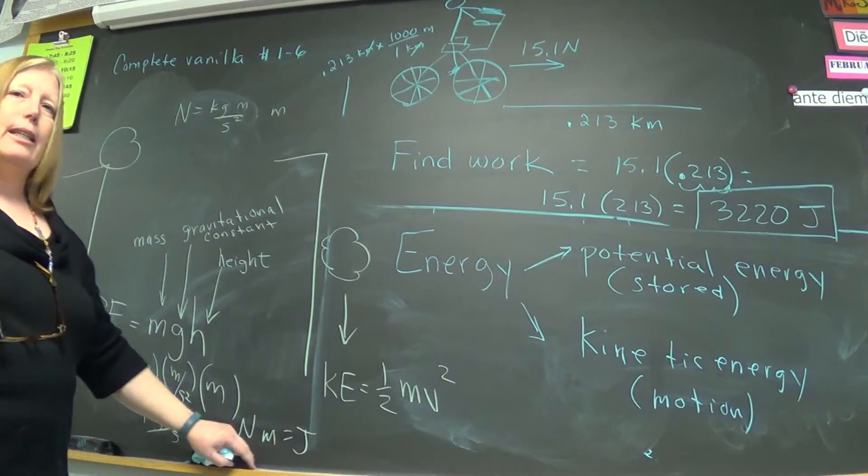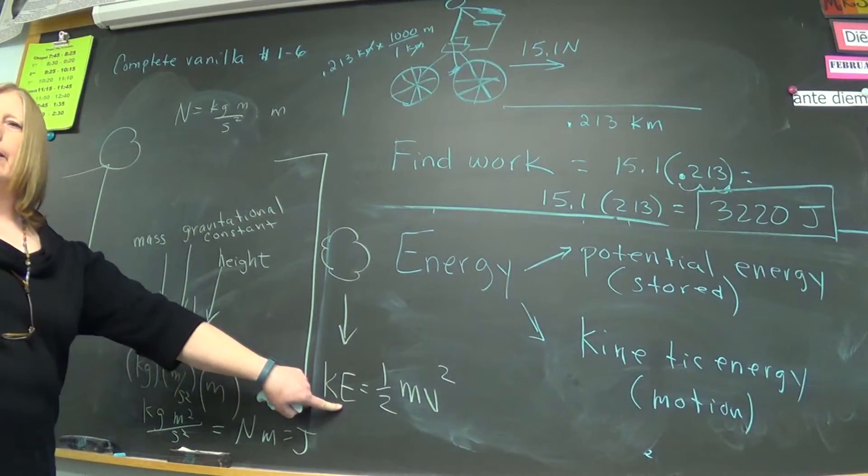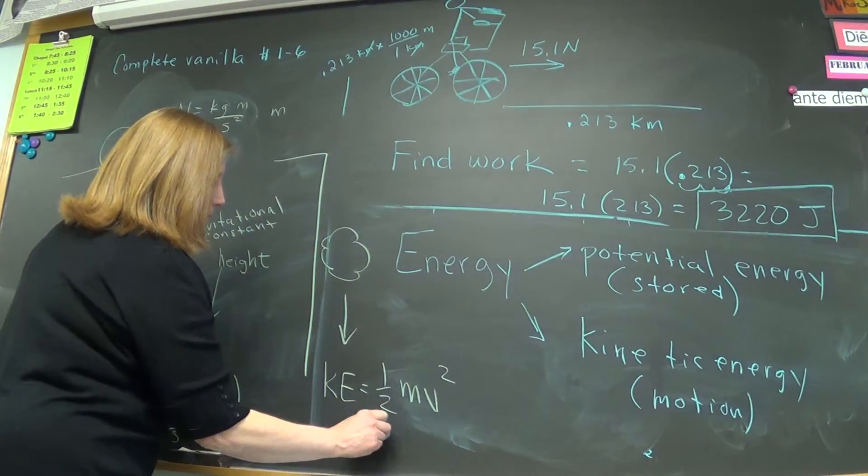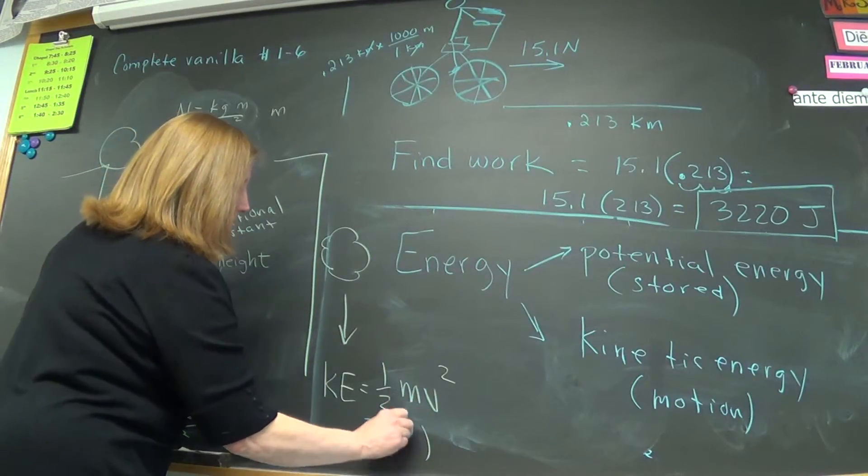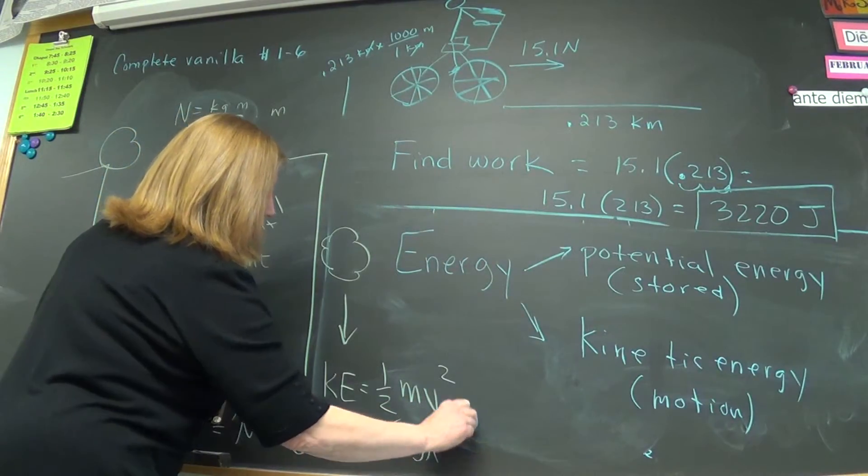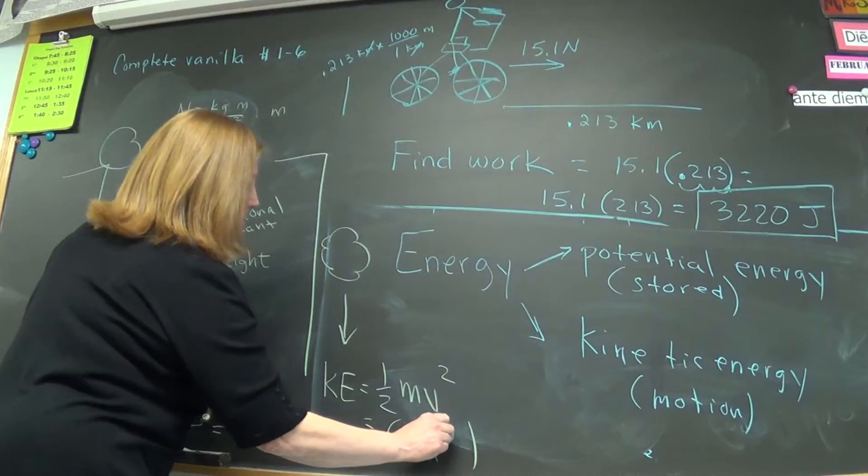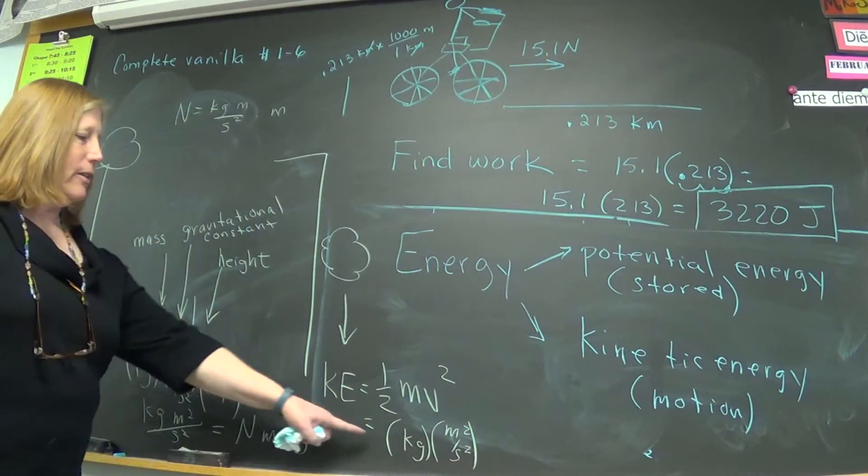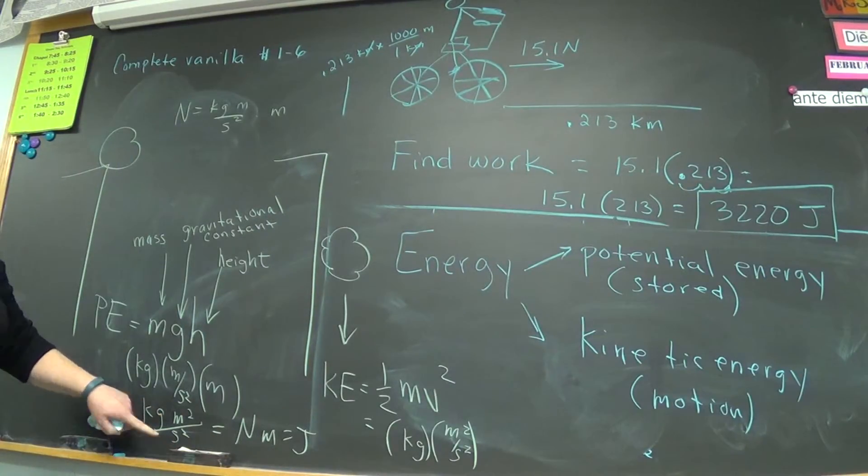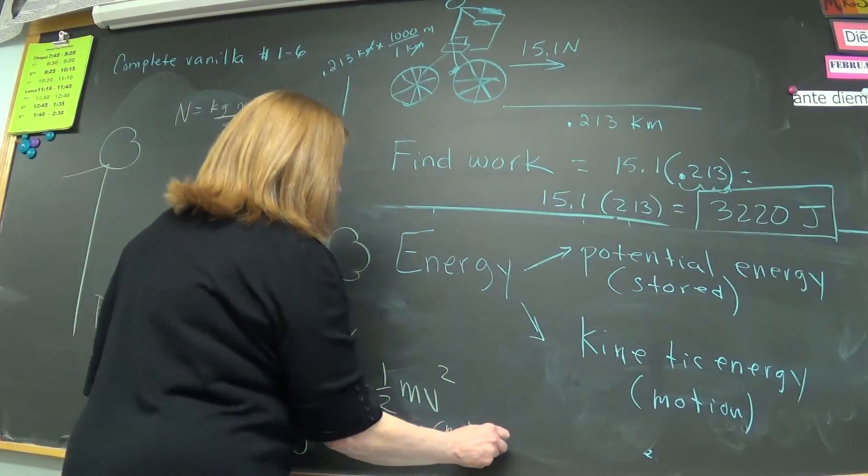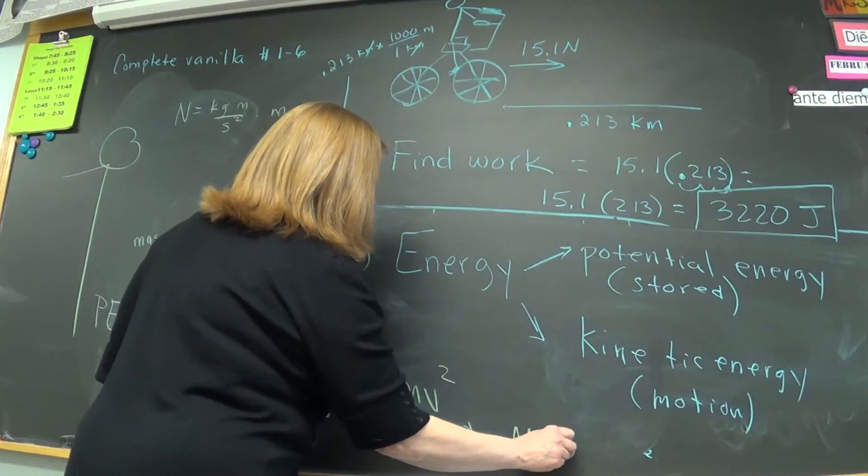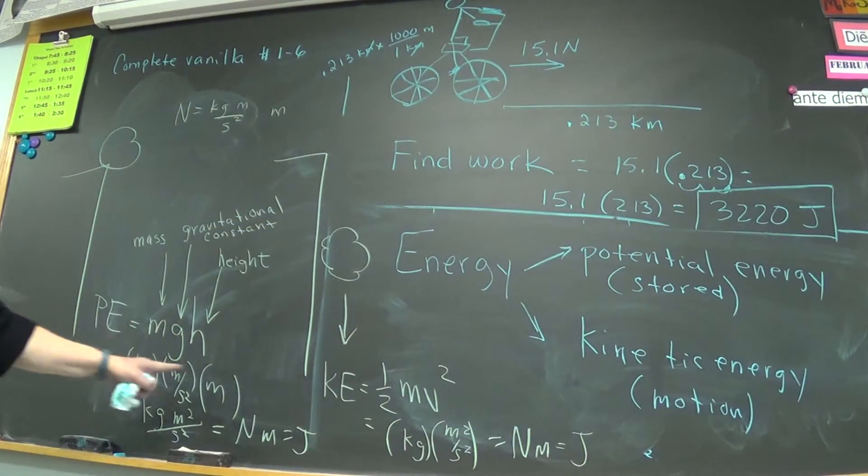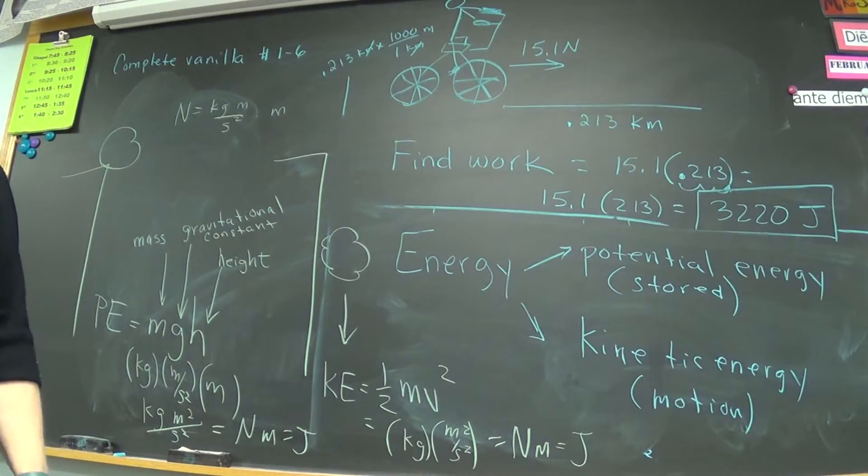All right, test it. Test that for KE. Um, Annabella, what's a unit for mass again? Kilogram. And velocity? Um, meters. Per? Per second. All right, and we're going to square both of those. So, we get a kilogram meter squared over second squared, just like we did here, which can also be newton meters, which is a joule. So, energy, potential, and kinetic have the same unit, the joule.